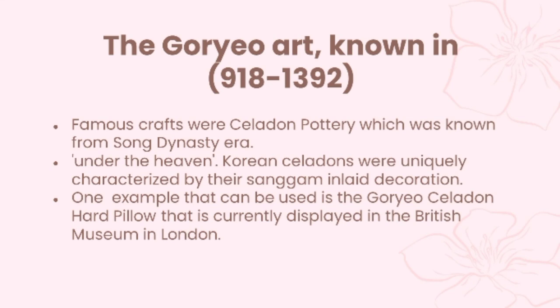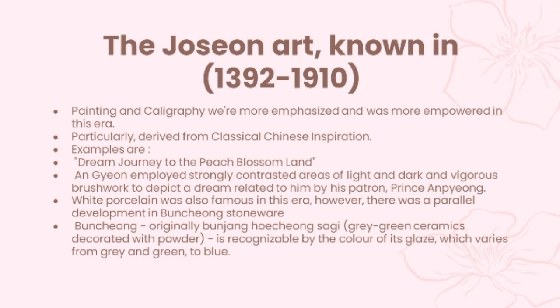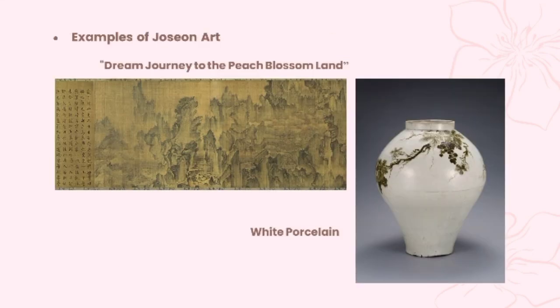The Koryo Art: famous crafts were celadon pottery, known from the Song Dynasty era. Korean celadons were uniquely characterized by their sanggam inlaid decoration. One example is the Koryo Celadon Heart Pillow currently displayed in the British Museum in London. The Joseon Art: painting and calligraphy were more emphasized in this era, particularly derived from classical Chinese inspiration. An example is Dream Journey to the Peach Blossom Land. White porcelain was also famous in this era. However, there was a parallel development in Buncheong stoneware, grey-green ceramics decorated with powder, recognizable by the color of its glaze which varies from grey and green to blue.